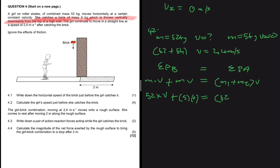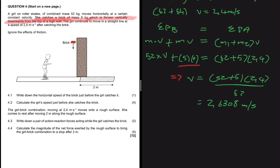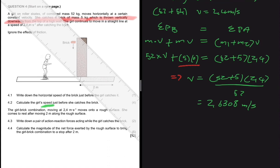After catching, we have 52 plus 5, multiplied by 2.4 meters per second. Since 5 times zero is zero, we're left with 52 times v equals 57 times 2.4. Solving: v equals (57 × 2.4) ÷ 52, which gives 2.6308 meters per second in the direction the girl was initially moving. Since the question asks for speed, we just state the magnitude.